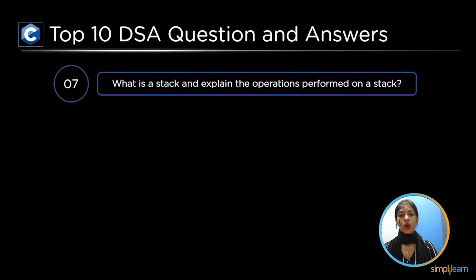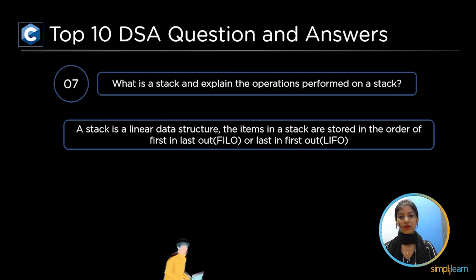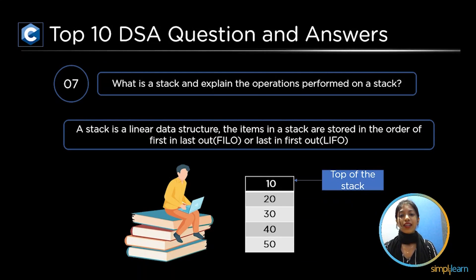Step 7th question is what is a stack and explain the operations performed on a stack. Stack is a linear data structure. The items in a stack are stored in the order of first in last out or last in first out. So, here let's consider an example where we have stack of books.